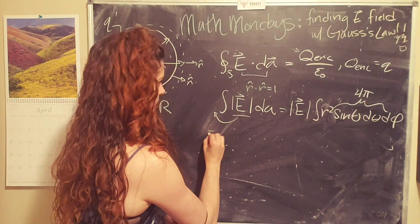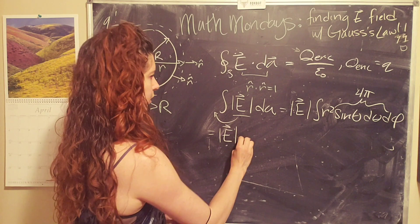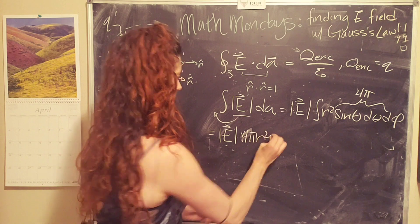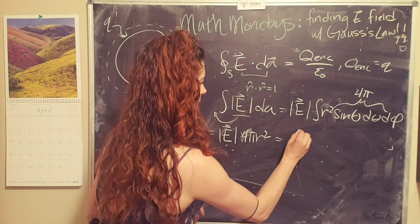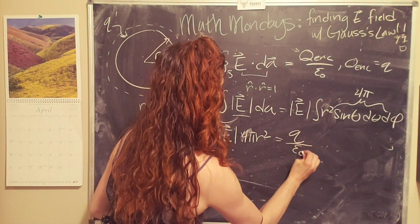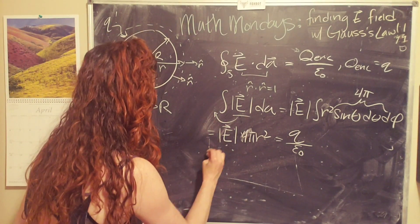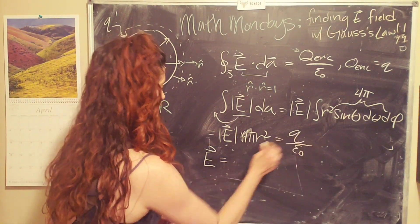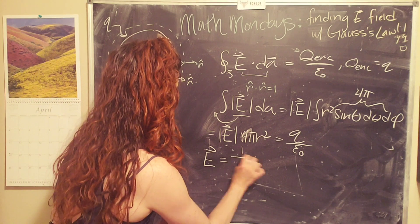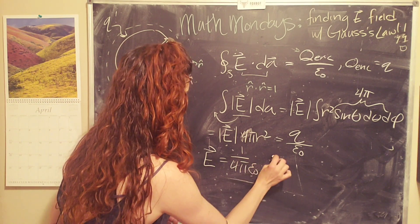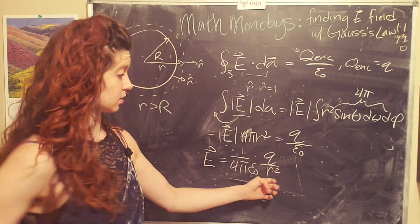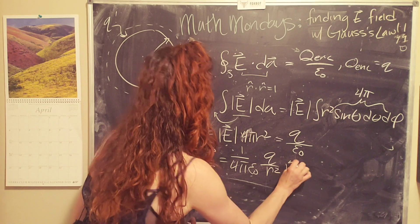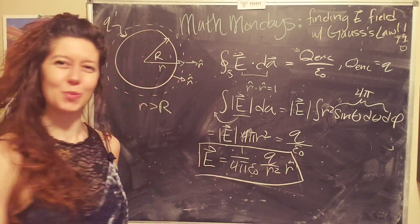So we end up with the magnitude of the electric field times r squared, times four pi r squared equals little q over epsilon naught. Hey, and then we just solve for the electric field. We know that the direction is radially outward. So we can add that in and we end up with one over four pi epsilon naught q over r squared, where this little r is the radius of our Gaussian surface, in the r hat direction. Hey, that wasn't so bad.